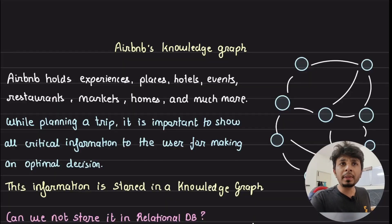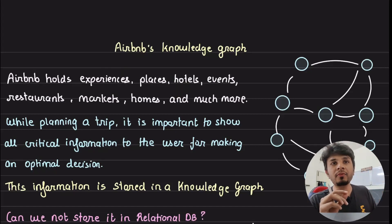So Airbnb holds experiences, places, hotels, events, restaurants, markets, homes, and much more. So while planning for a trip, it is important to show all of this critical information to the user so that the user can make an informed decision while making the booking.